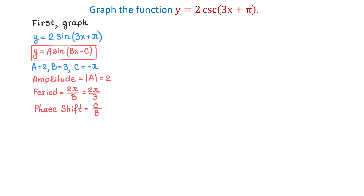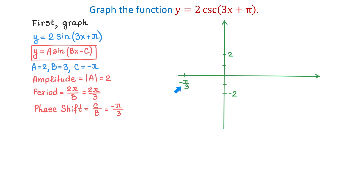The phase shift is c over b, which is negative pi over 3. This represents the x-coordinate where the cycle will begin. I will start the rectangular coordinate system, and here we have the point where the cycle will begin. To graph the sine function over one period, we will need five points: the maximum, the minimum, and the x-intercepts. For this, we need to divide the period by 4 to find a quarter period.